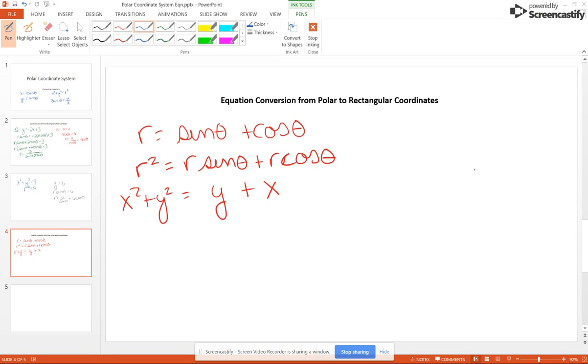If you're given the equation R equals some number like 16, then I would square both sides. So I have that nice R squared. R squared equals 256, and then R squared is X squared plus Y squared equals 256.